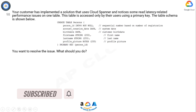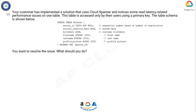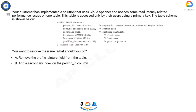Your customer has implemented a solution that uses Cloud Spanner and notices some red latency related performance issues on one table. This table is accessed only by their users using a primary key. The table schema is shown below. You want to resolve the issue. What should you do?